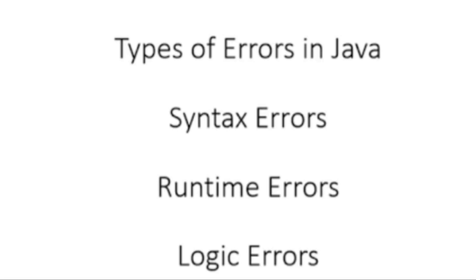A logical error will display the output but it will be incorrect — it will display abnormally. Incorrect output will be displayed because of the logical error. A logical error produces undesired output or other behavior. Even after removing syntax and runtime errors, if a program is displaying incorrect output on screen, there is still some error left in the program called a logical error.